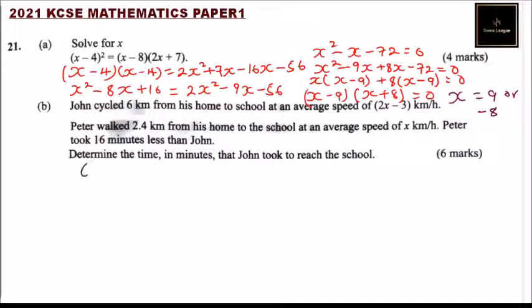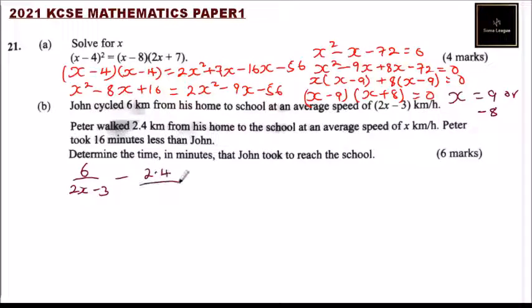John's time is distance over speed: 6 divided by (2x minus 3). Peter's time is 2.4 divided by x. The difference is 16 minutes. We write: 6 over (2x minus 3) minus 2.4 over x equals 16 divided by 60, to convert minutes to hours.